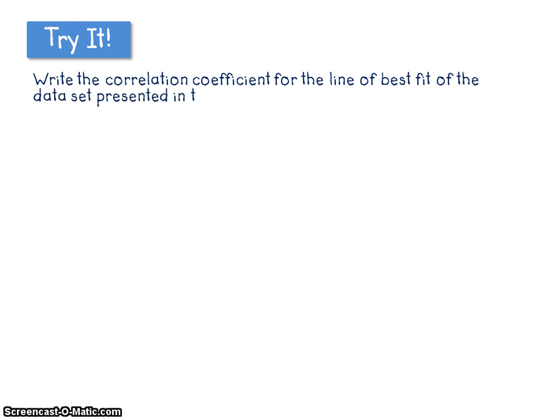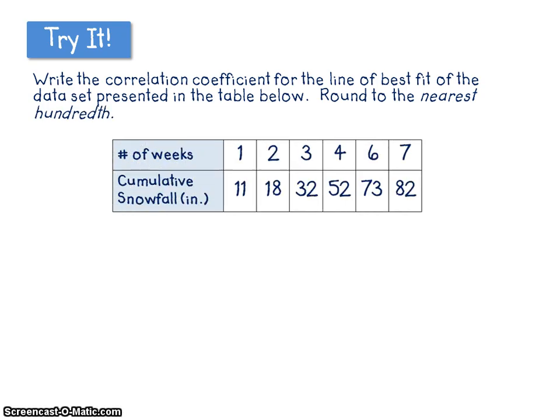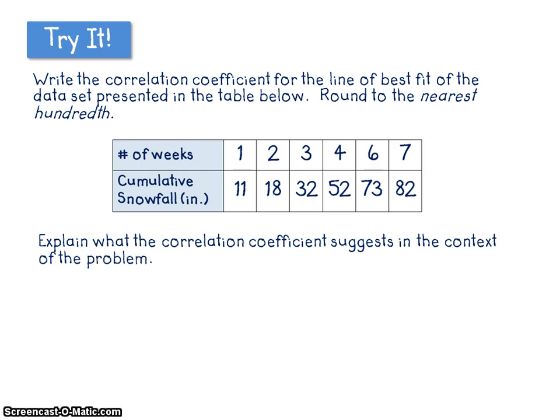So I'm going to have you try one on your own. Write the correlation coefficient for the line of best fit of the data set presented in the table below. Round to the nearest hundredth. Explain what the correlation coefficient suggests in the context of the problem.